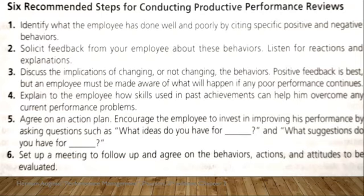In review, there are six recommended steps for conducting productive performance reviews. The first step is identifying what the employee has done well and poorly by citing specific positive or negative behaviours. It is not just about work on paper — non-verbal behaviour is also recorded. As discussed in previous lectures, the manager is responsible for noting every good and bad behaviour of the employee.